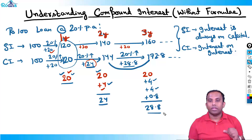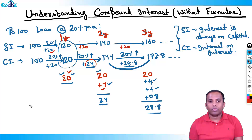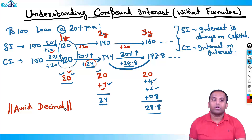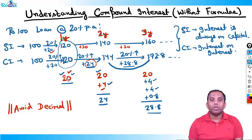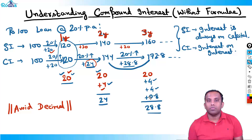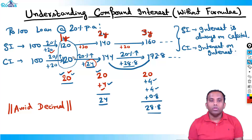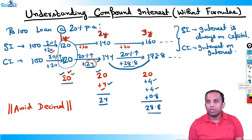To avoid decimals, what will we do? Let me write a question here. This 0.8 — it could be 0.6 or some recurring decimal — so I don't want to solve in decimals. To avoid decimals, let me write the next question.